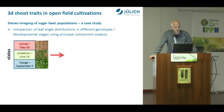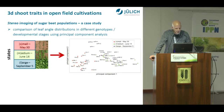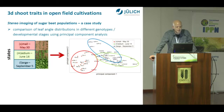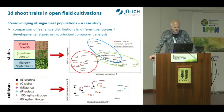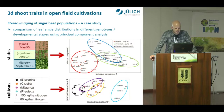We performed analysis on different sugar beet cultivars at different time points and applied principal component analysis to see if the data clusters. It clusters very well regarding the different developmental states in our study, and we could also nicely cluster the individual cultivars.